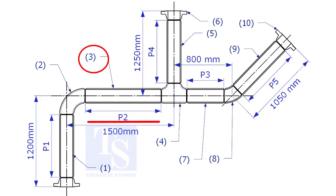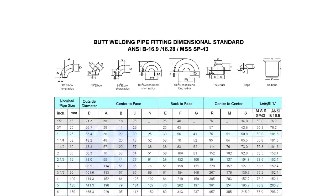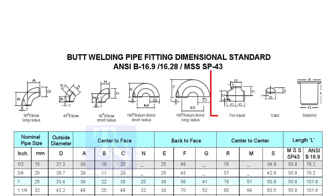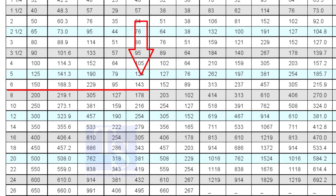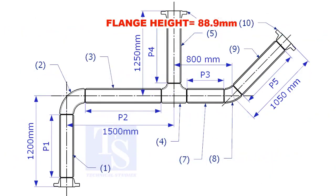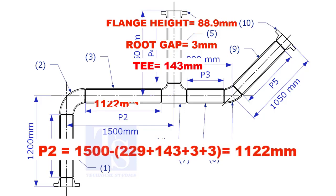Let us calculate the length of item number 3. We already know the takeoff length of the 6 inch long radius elbow. Now, check the chart for the takeoff length of the equal tee. It is 143 millimeters. The length of item number 3 is 1122 millimeters.